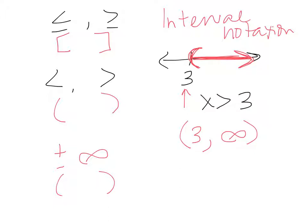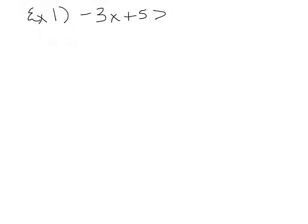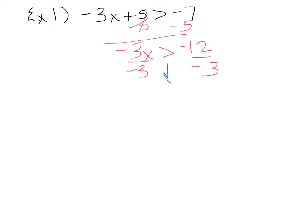Let's get started working some examples. Our first example is just going to be a nice easy linear inequality: negative 3x plus 5 is greater than negative 7. Just like solving any equation, you want to isolate the variable. Subtract 5 from both sides to get negative 3x is greater than negative 12. Now remember, when you multiply or divide an inequality by a negative, you have to flip that sign. So x is now less than positive 4.